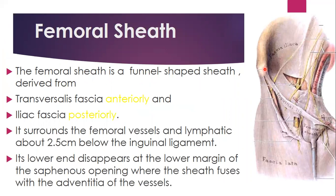The femoral sheath is formed by the transversalis fascia anteriorly and the iliac fascia posteriorly. They come together to form a sheath that envelopes the femoral vein and the femoral artery, but it does not envelope the femoral nerve.